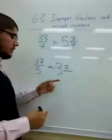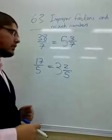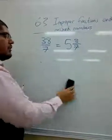And then, the denominator stays the same. It's over 5. Now then, what happens, or how do we do it if we want to do it the other way around?